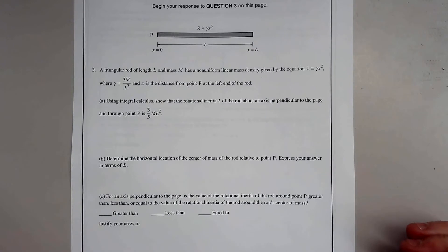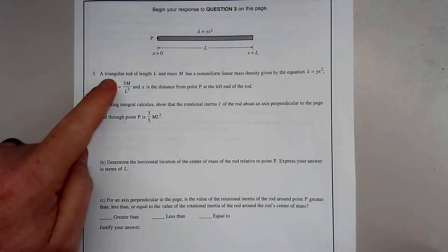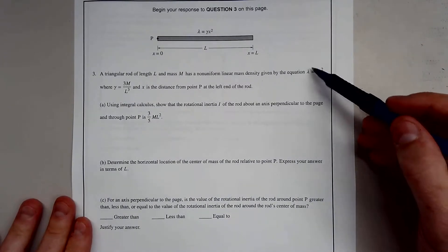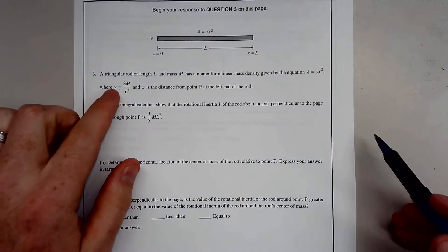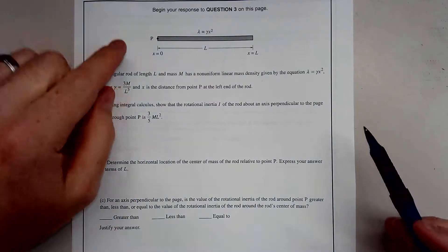The first two questions had no calculus at all. Here we have a triangular lot of length L and mass M with non-uniform linear density given by the equation lambda equals gamma X squared, where gamma is 3M over L cubed and X is the distance from point P at the left of the rod.